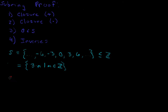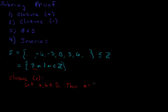Let's go ahead and show closure under addition. To show closure under addition, we need to take two things in this set, add them together under addition, and show that their sum is also an element of this set. So let A and B be elements of S. Things in S look like 3 times some integer, so A equals 3r and B equals 3s for some integers r and s.